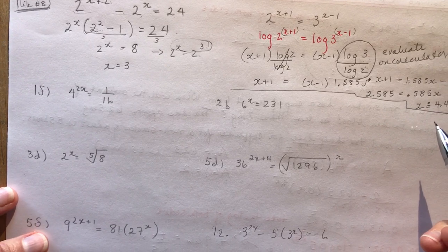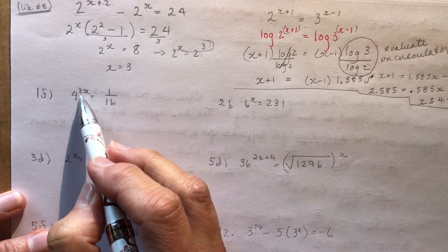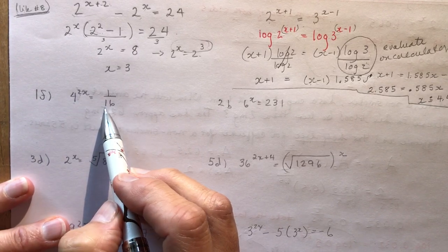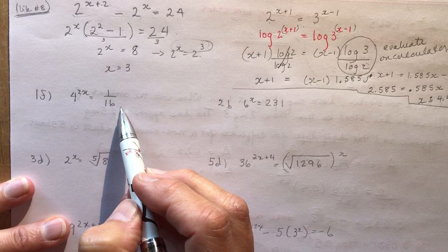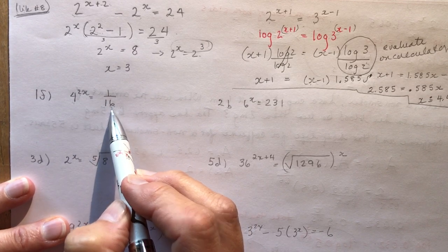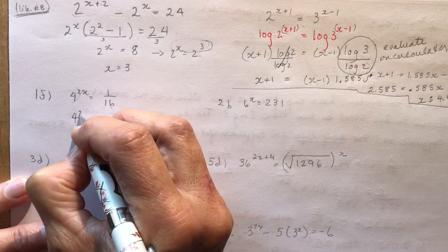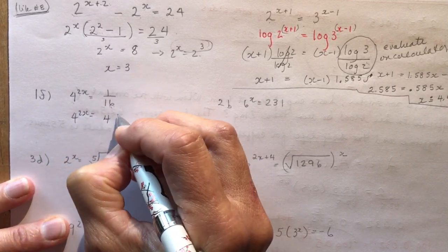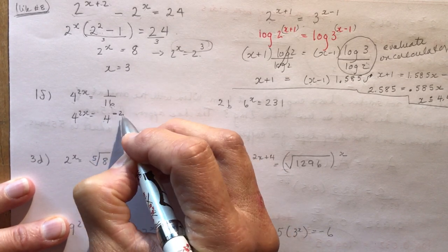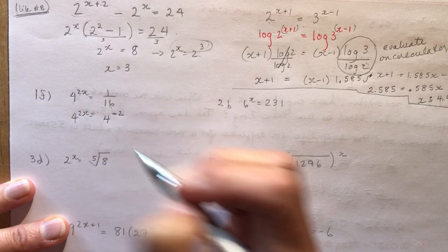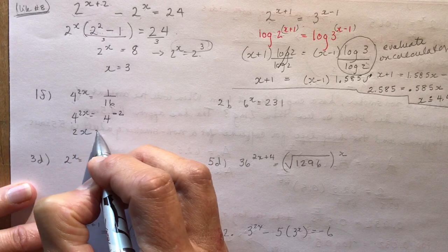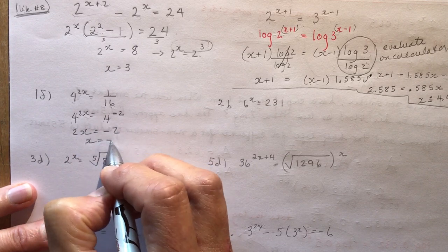Now an easier one: 4 to the 2x equals 1 over 16. Here you want to write both sides with the same base. 4 and 16 share a base of 4, so 1 over 16 is 4 to the negative 2. Since the bases are the same, equate the exponents: 2x equals negative 2, so x equals negative 1.